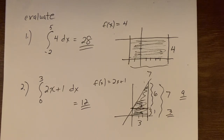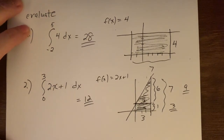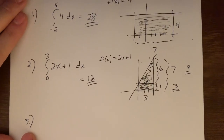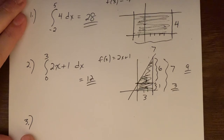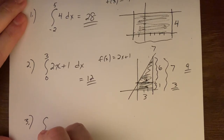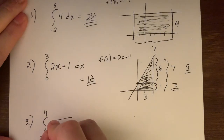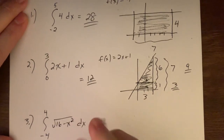One more problem like this — I don't want to get too hung up here since section 4.3 will give us much more concrete ideas. These first problems require nice geometric shapes. Number three: the integral from minus 4 to 4 of the square root of 16 minus x squared dx. We're really starting to get something a bit unusual here.